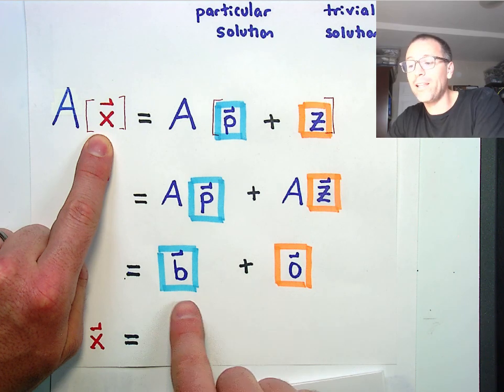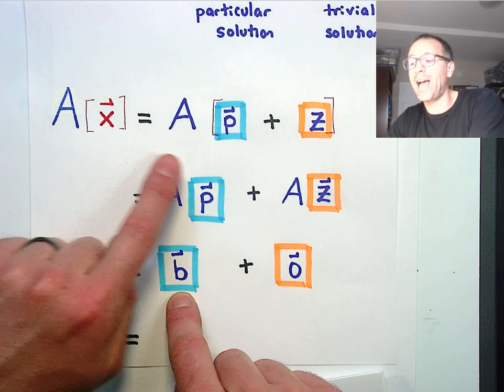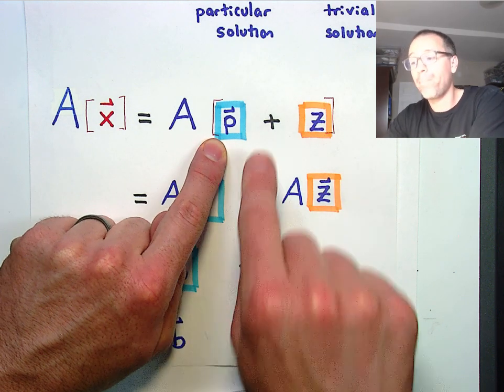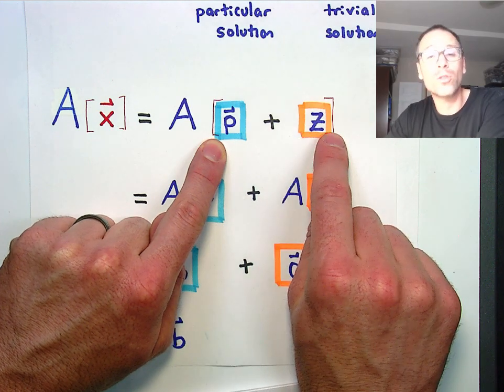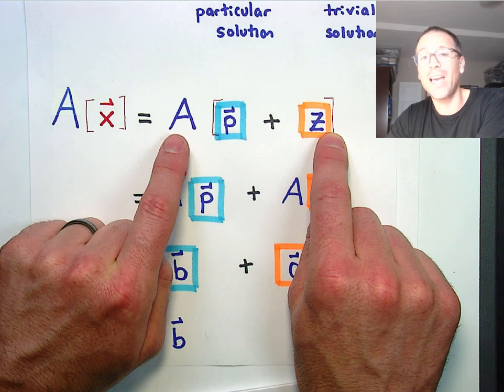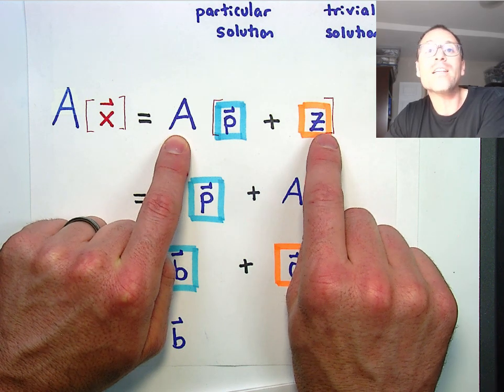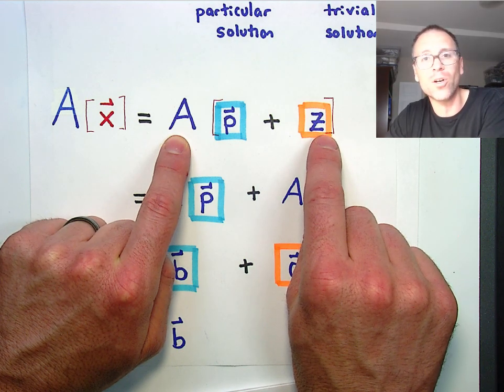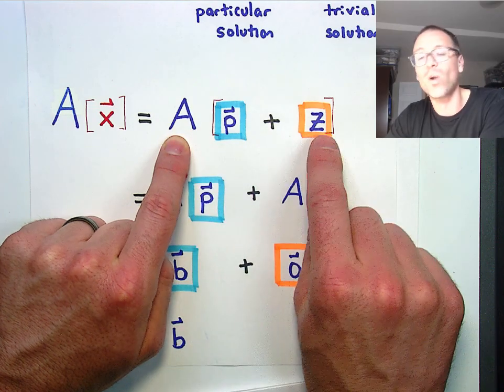And we come back to that really beautiful structure. Any solution to a linear systems problem is going to be written as a particular solution plus a trivial solution to the homogeneous linear systems problem involving the matrix A. Another way to say that is something that gets sent to 0 when multiplied by A. That's why I call it z.